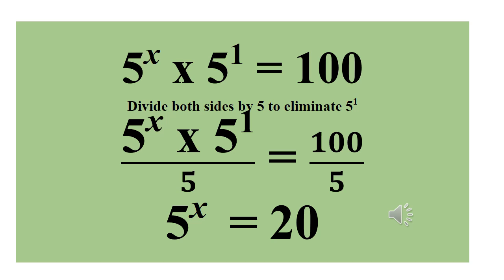The 5 cancels with 5 raised to power 1, so we have 5 raised to power x equals 20. We got the 20 from 100 divided by 5. So we have 5 raised to power x equals 20.